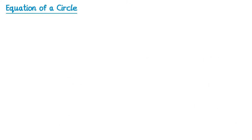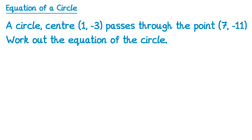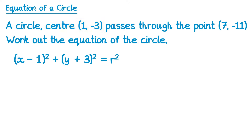Now let's have a look at some exam style questions. For this one we've got a circle, we're told the center, and we're also told a point that's on the circle and we need to work out the equation of the circle. Since we know the center is (1, -3), we know it starts with (x minus 1) all squared plus (y plus 3) all squared equals r squared. So we're almost there — we just need to find the radius.